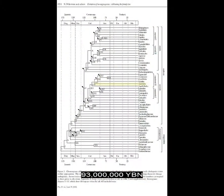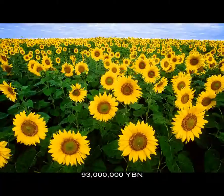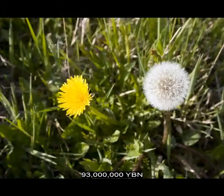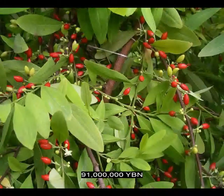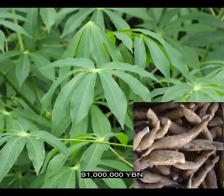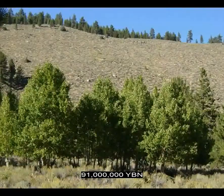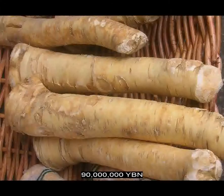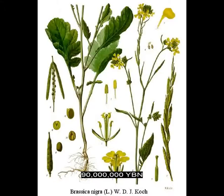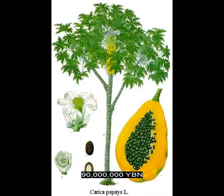Flowers Asterales — tarragon, daisy, artichoke, sunflower, lettuce, dandelion. Flowers Malpighiales — coca, rubber tree, cassava, poinsettia, willow, poplar, aspen. Flowers Brassicales — horseradish, mustard, cabbage, broccoli, radish, papaya.